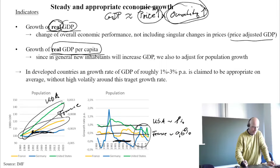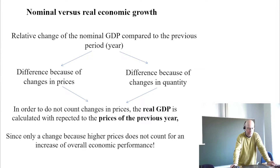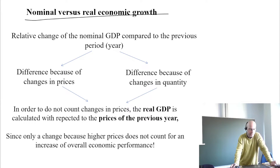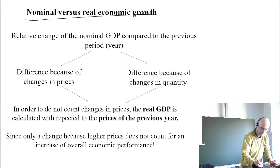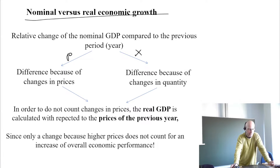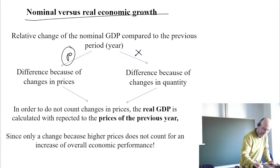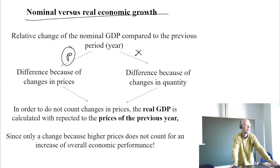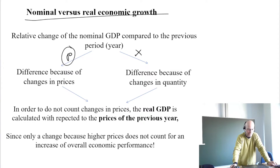Let's go in detail to the calculation of what is meant by real GDP. The relative change of nominal GDP per year has two components: one price component and one quantity component. We need to ask ourselves how we can get rid of the price effect. If everything in quantity stays the same as in 2021 and prices go up on average 10%, then we would have economic growth of 10% - which is clearly wrong.